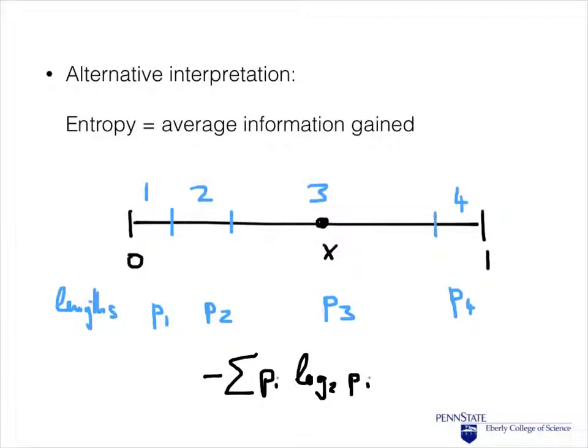The entropy of the length measures the expected information gained by knowing that our value x is in interval i. Here we have the formula again. This is an expected value, namely the expected value of the negative logarithm of P_i. And again, it turns out that the information gained, the expected information gained, is rather small if one of the intervals is rather large. Because then, with high probability, x will end up in that interval, and we don't gain much information by knowing that x is in that large interval. The highest entropy, or expected information gain, in fact, happens when all the intervals are of the same size.